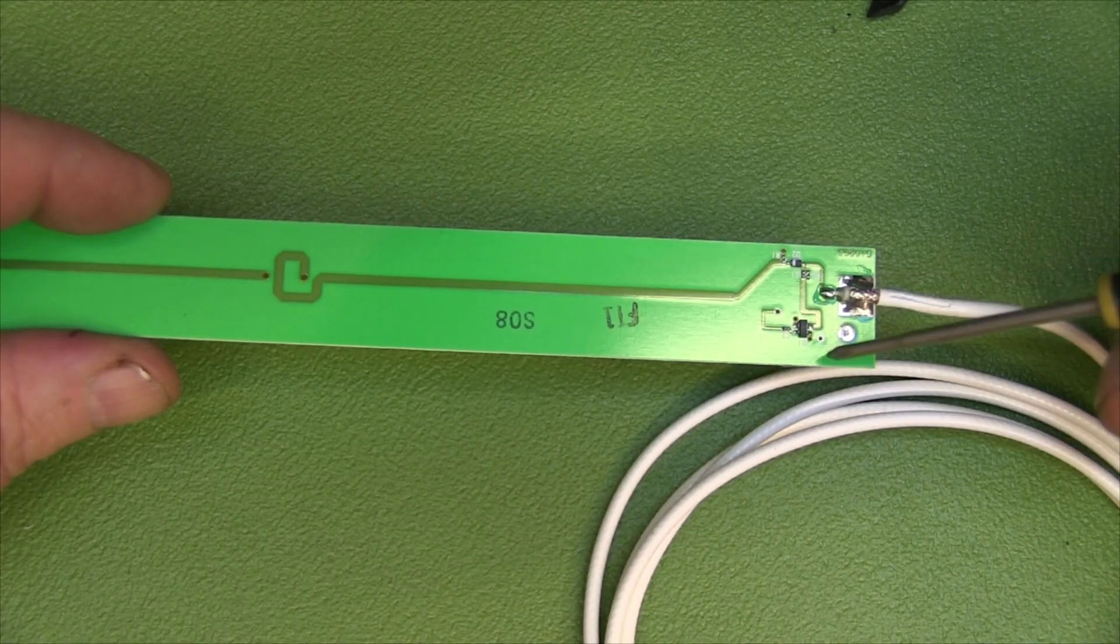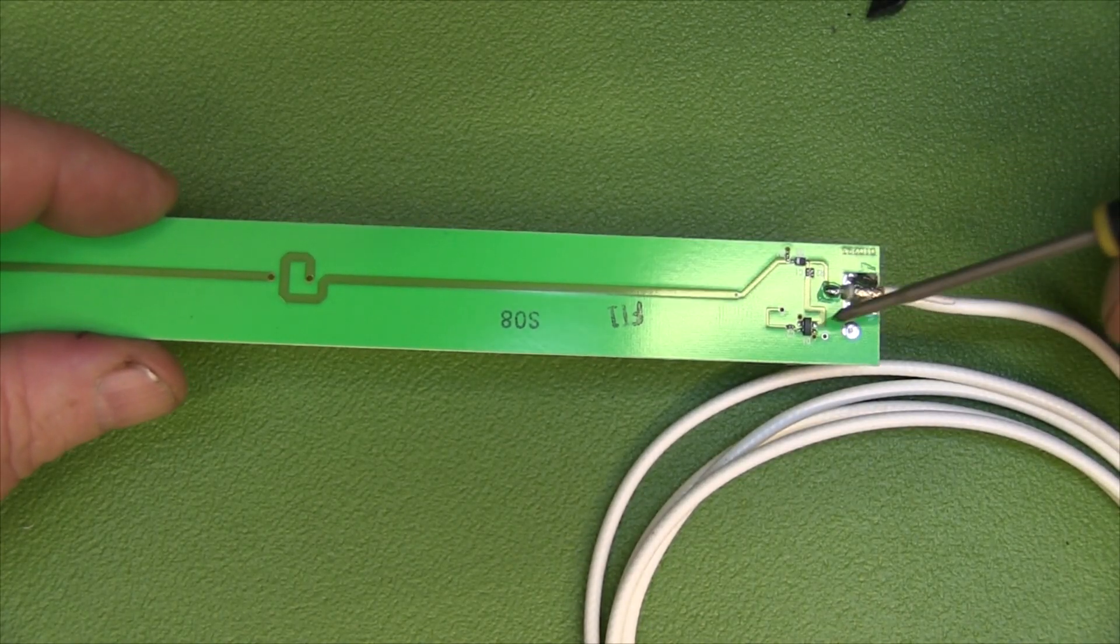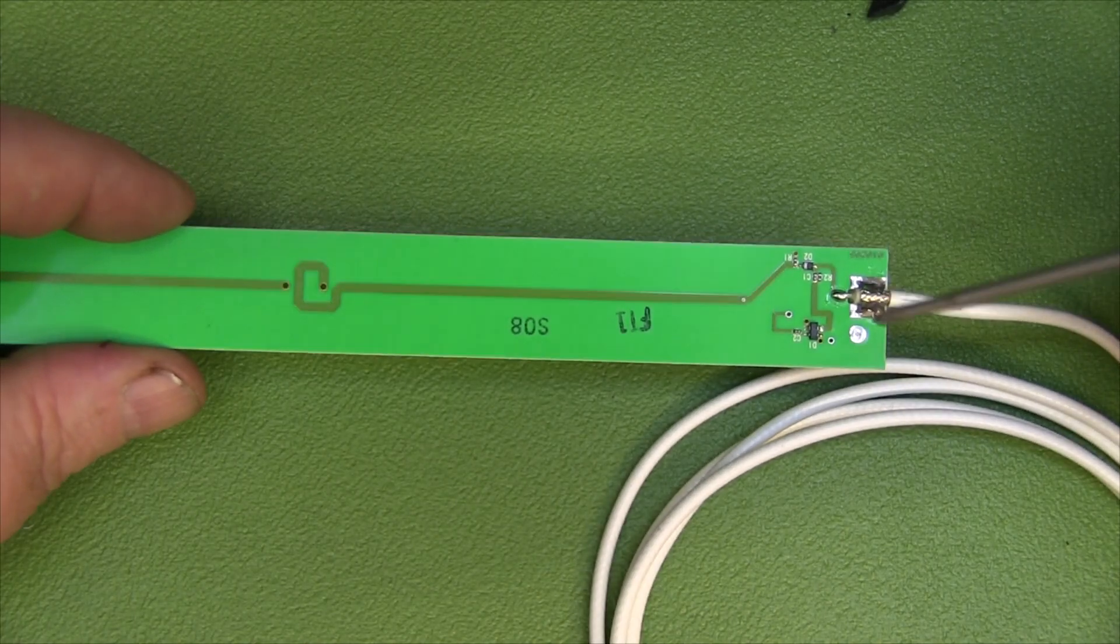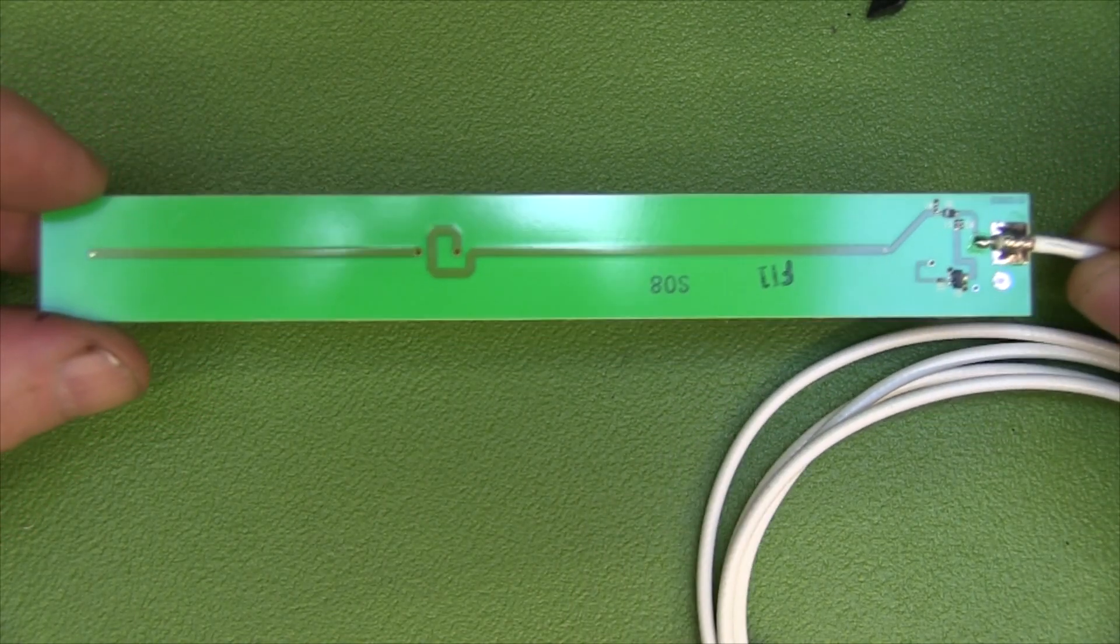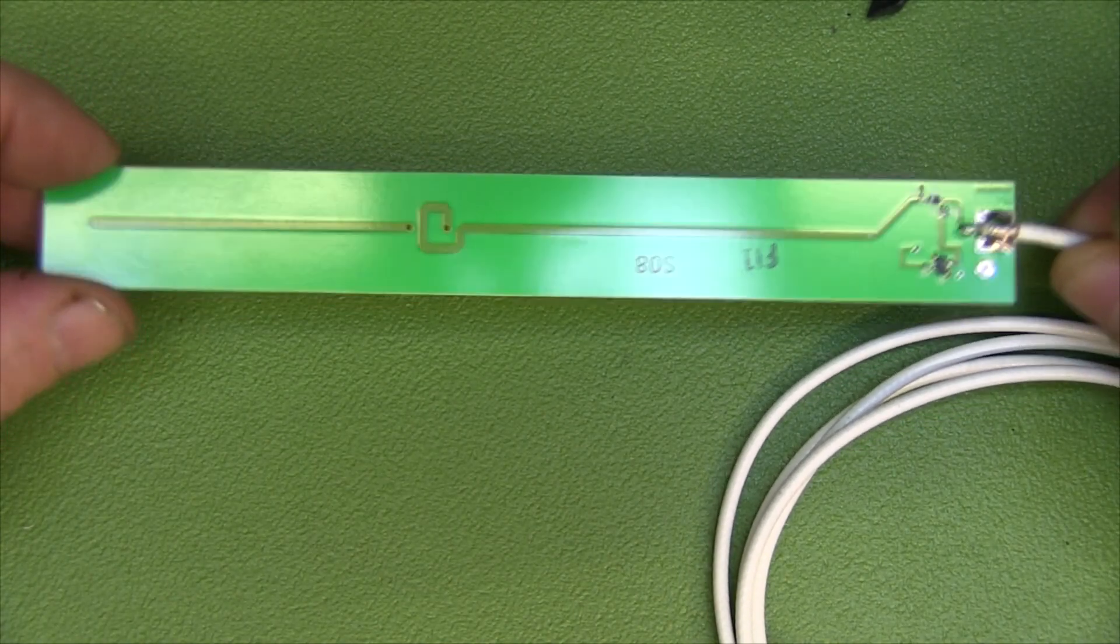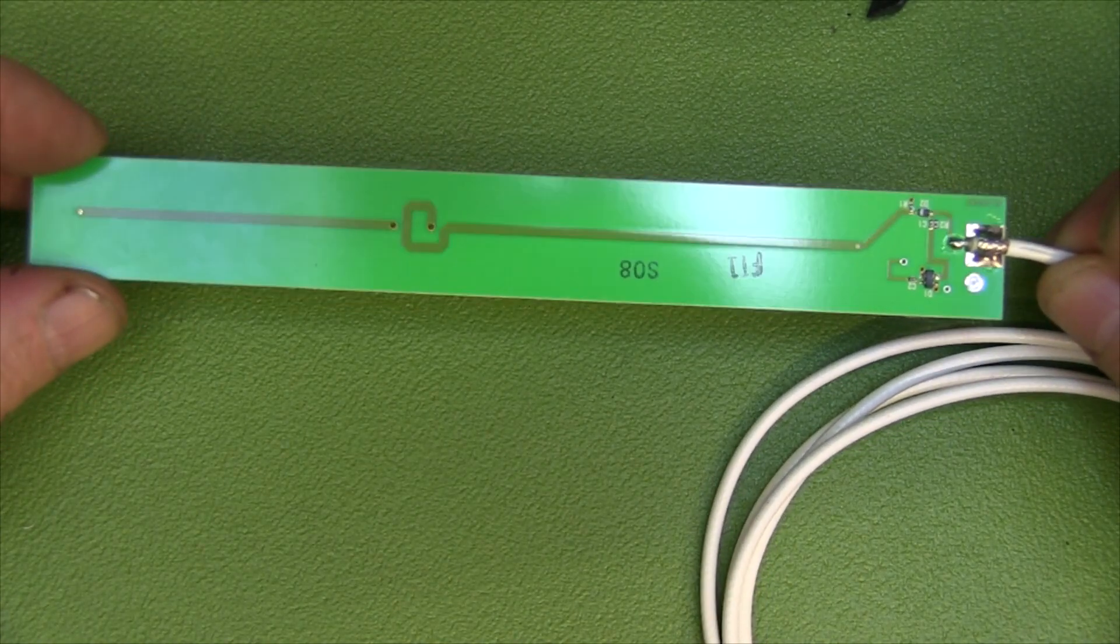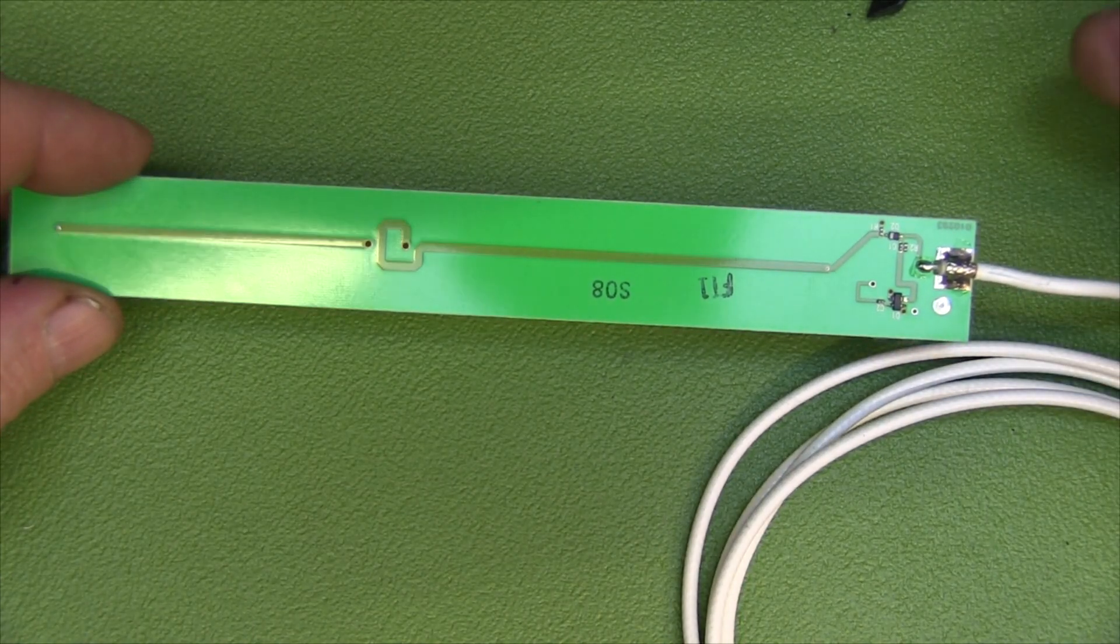I think because we've got these components in the way of the signal path here, they probably eat up a lot of the gain and take that away from the antenna. That's probably why it's only 2.5 dB of gain. Very interesting design.